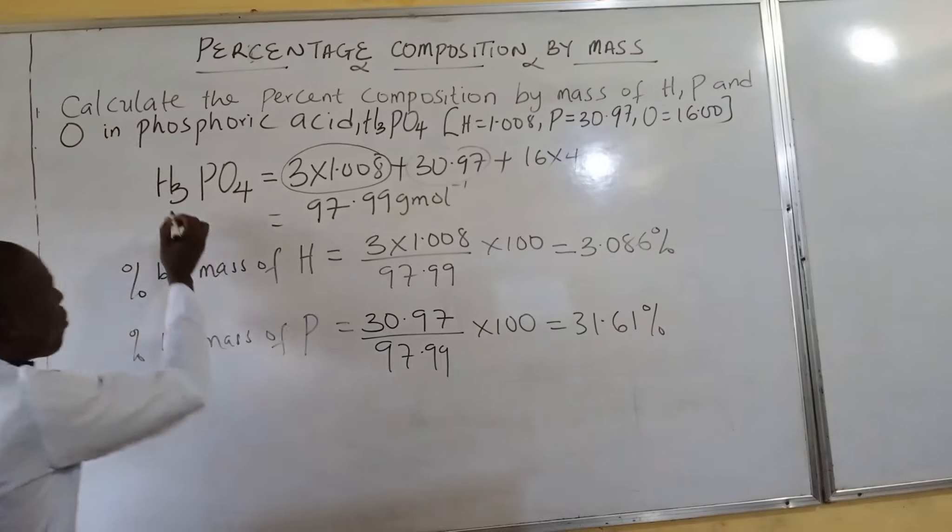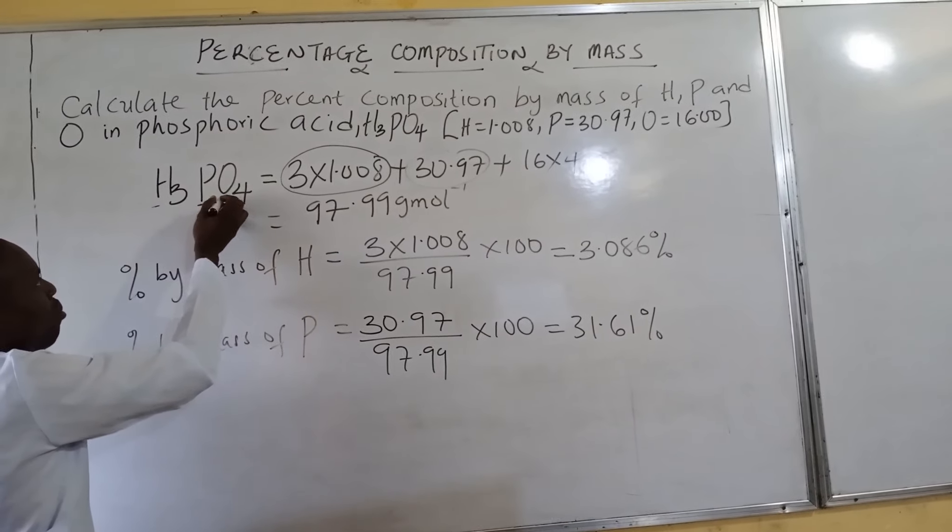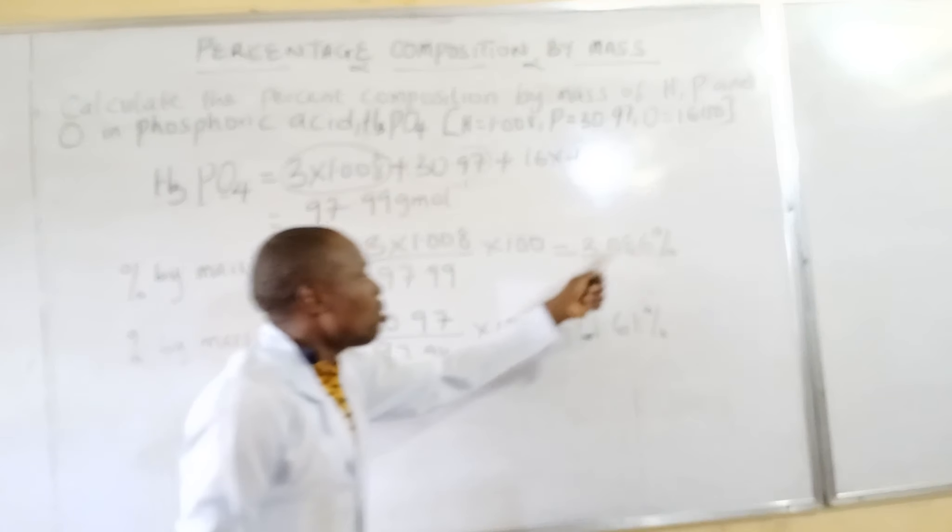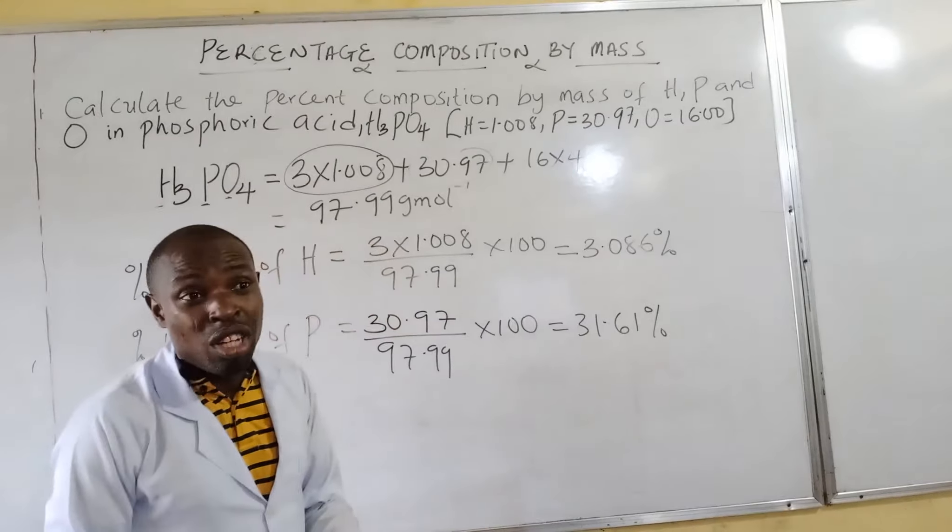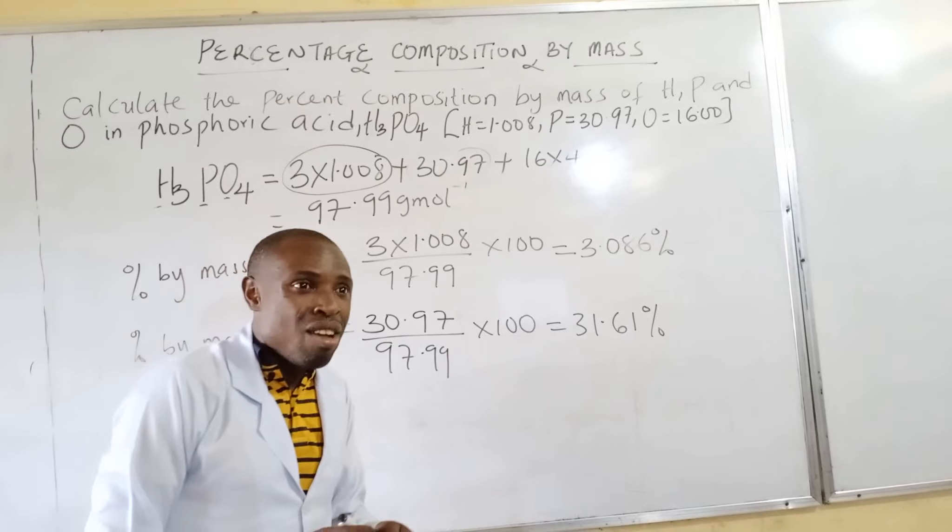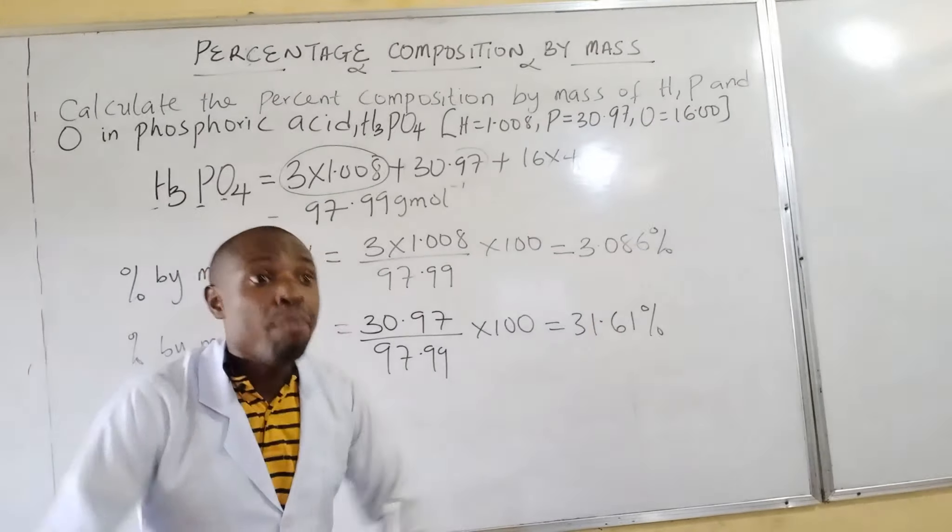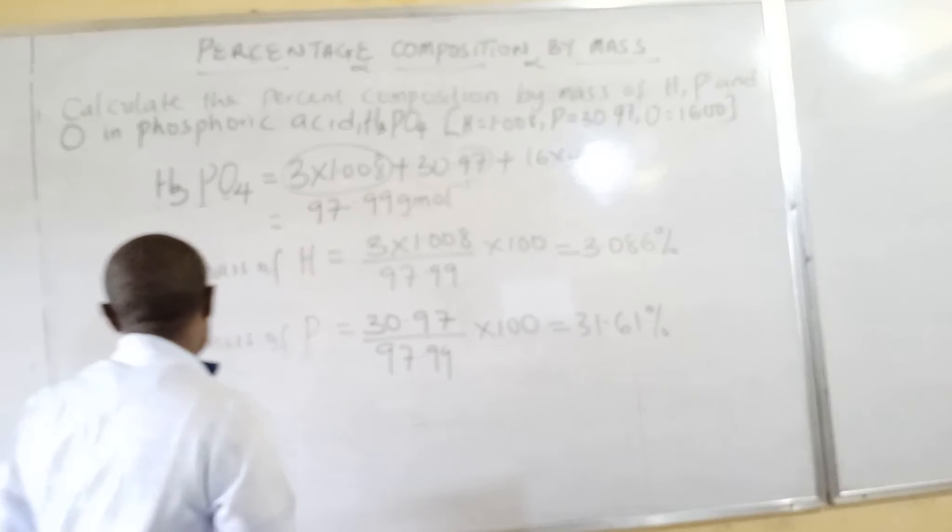Now, if I'm adding hydrogen, phosphorus, and oxygen in this compound, I could get it for oxygen by adding these two up and subtracting from 100. You will get the answer still. But not to waste time, let me also solve it using the usual method. So here we come.